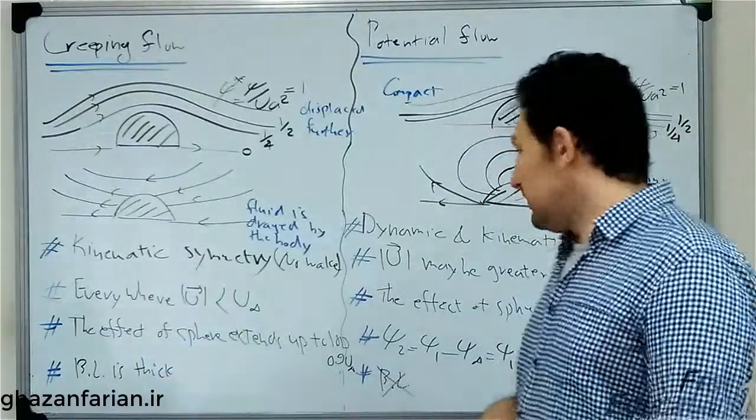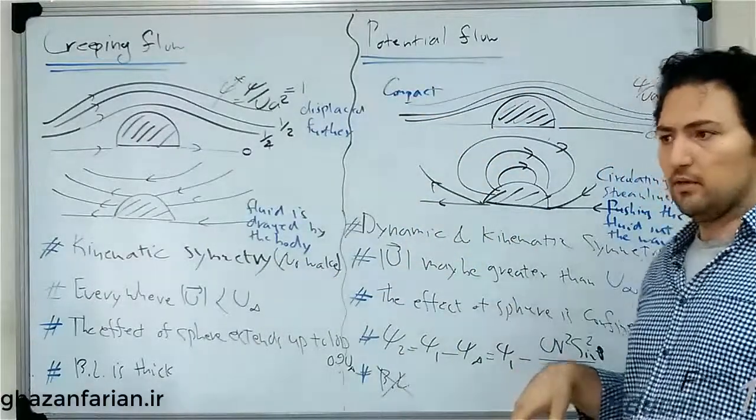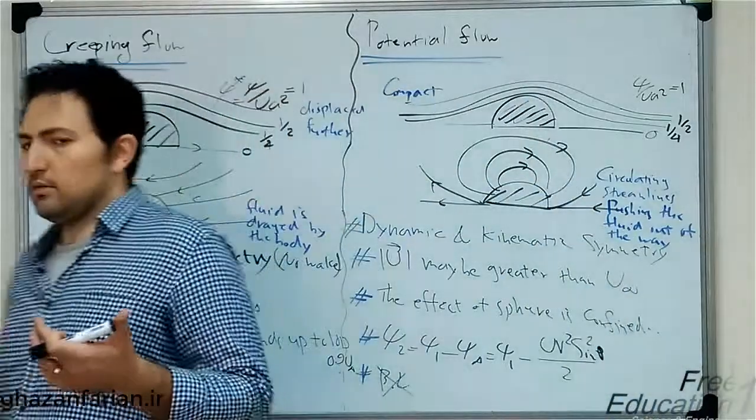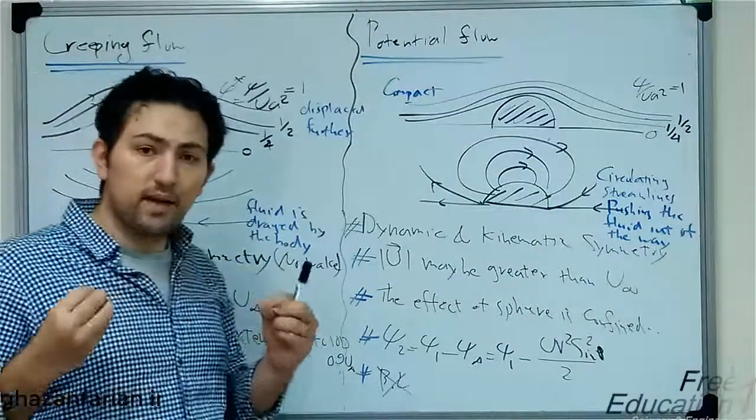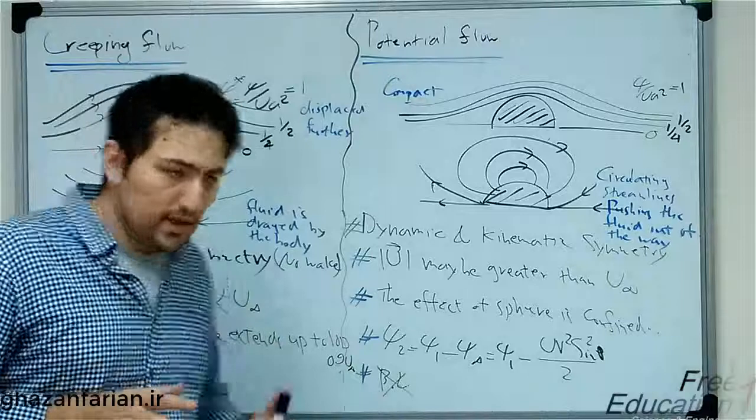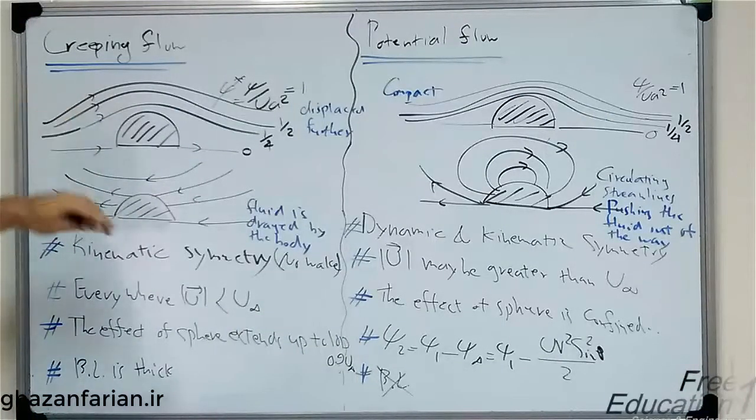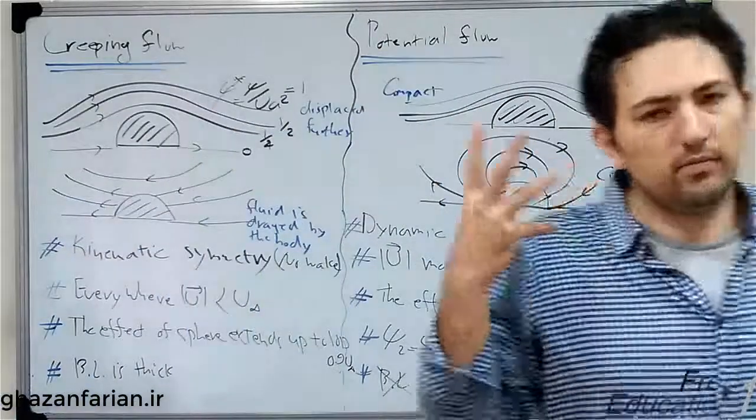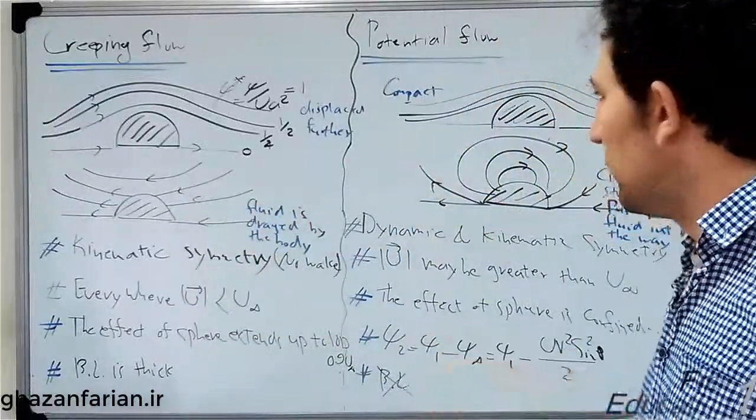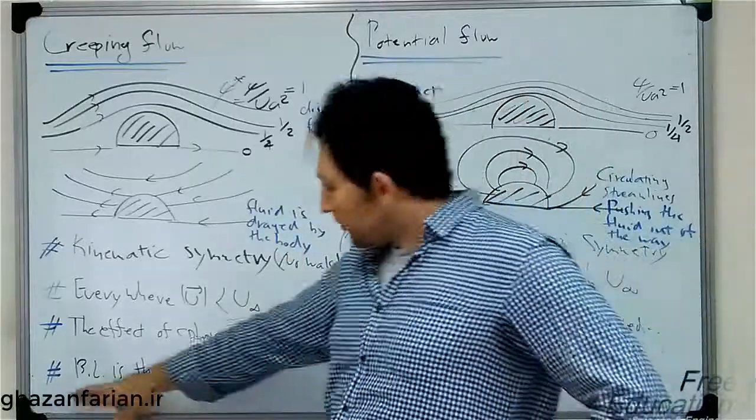Also, we don't have the boundary layer in potential flow. The boundary layer is a concept which appears in rotational flows. Speaking about the boundary layer theory in potential flow is meaningless. But in creeping flow, we have boundary layer because the flow is viscous. You can't find the boundary layer here because the distance over which the effect of the existence of this obstacle in the fluid penetrates is very huge. So, the thickness of the boundary layer is very thick.